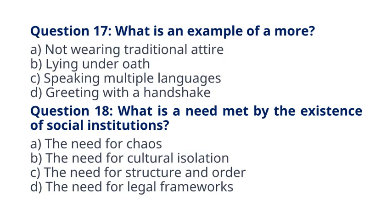Question 18. What is a need met by the existence of social institutions? A. The need for chaos. B. The need for cultural isolation. C. The need for structure and order. D. The need for legal frameworks. The correct answer to question 18 is option C, The need for structure and order. Explanation: Social institutions fulfill the need for structure and order in society.